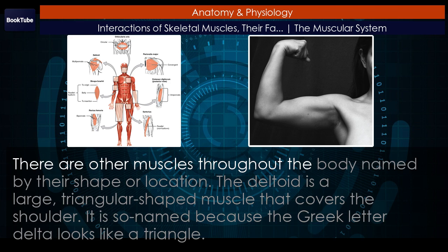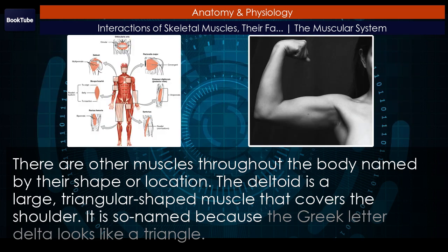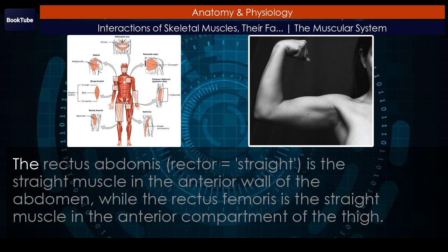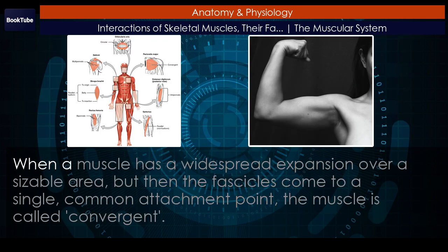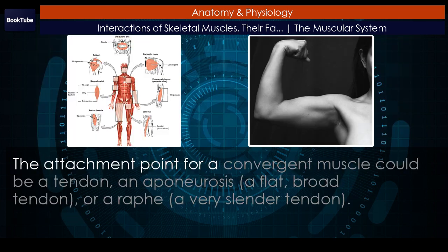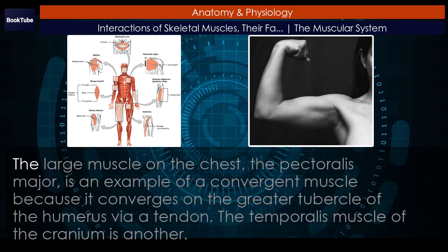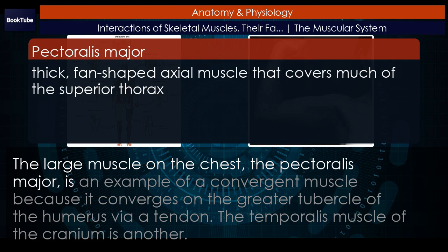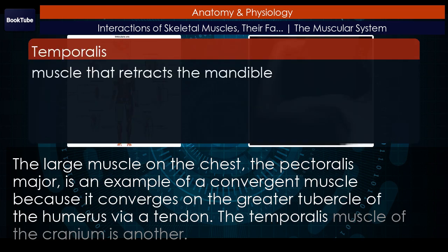There are other muscles throughout the body named by their shape or location. The deltoid is a large, triangular-shaped muscle that covers the shoulder — named because the Greek letter delta looks like a triangle. The rectus abdominis is the straight muscle in the anterior wall of the abdomen, while the rectus femoris is the straight muscle in the anterior compartment of the thigh. When a muscle has a widespread expansion over a sizable area but the fascicles come to a single common attachment point, the muscle is called convergent. The attachment point could be a tendon, an aponeurosis, or a raphe. The pectoralis major on the chest is an example of a convergent muscle, as it converges on the greater tubercle of the humerus via a tendon. The temporalis muscle of the cranium is another.